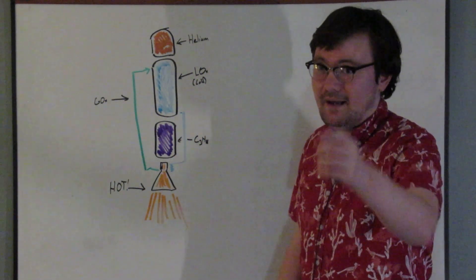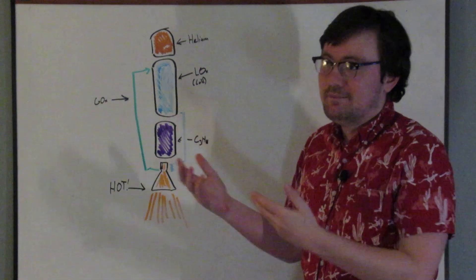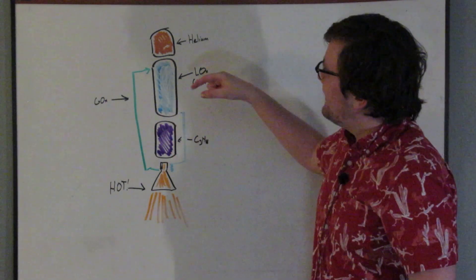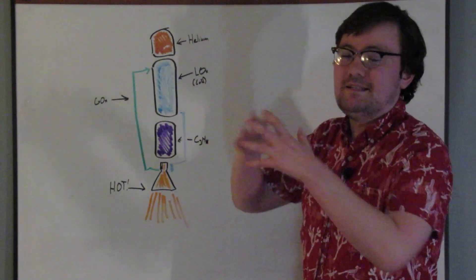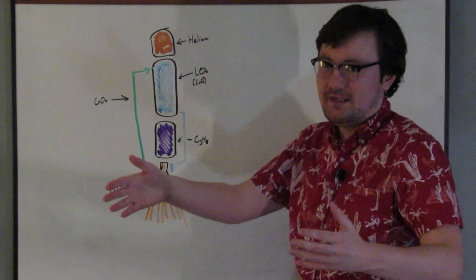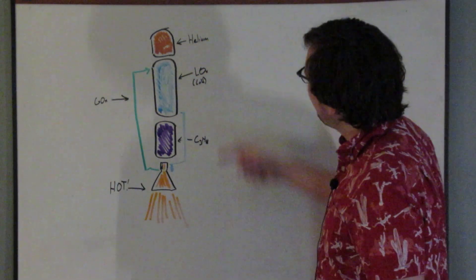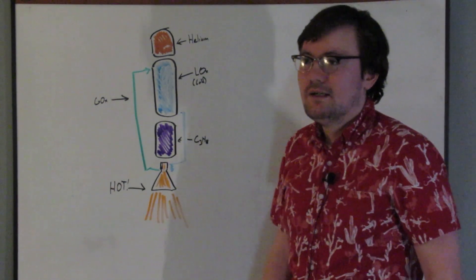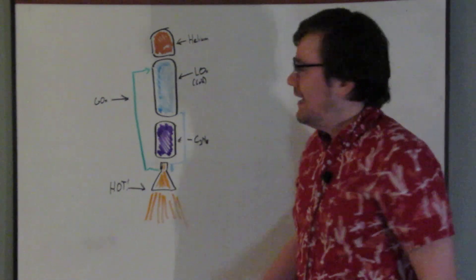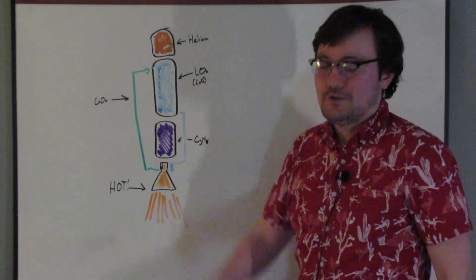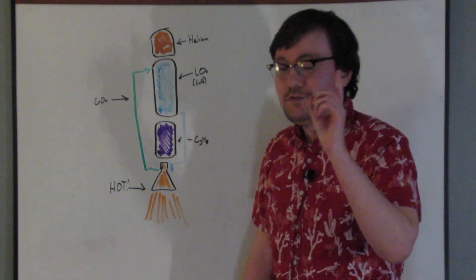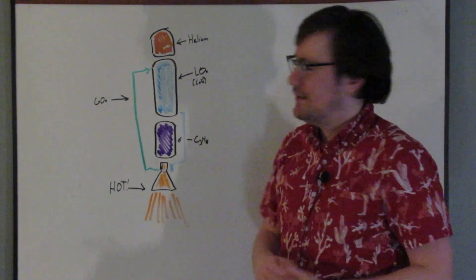All launch vehicles have helium bottles on them that squirt helium into the tank to maintain tank pressure, 35 to 45 psi. The example I've drawn here is a pressure-fed system, so tank pressure is also 350 psi, and the helium is also pushing the propellants out of the tank.